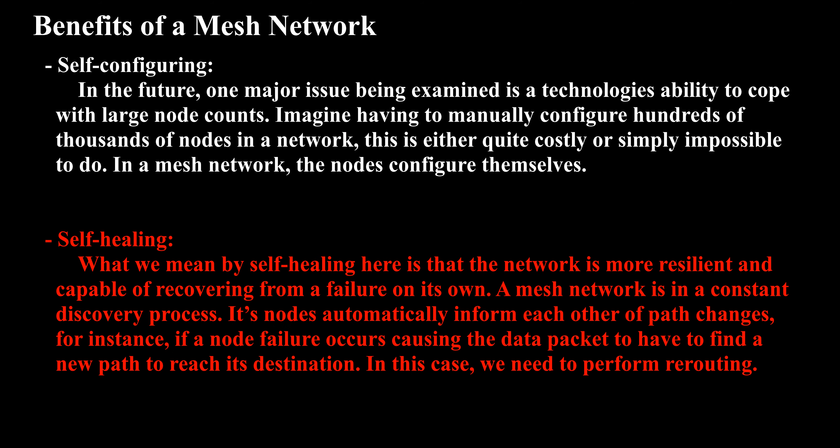Self-healing means that the network is more resilient and capable of recovering from a failure on its own. A mesh network is in a constant discovery process. Its nodes automatically inform each other of path changes — for instance, if a node failure occurs causing the data packet to have to find a new path to reach its destination. In this case, we need to perform rerouting.